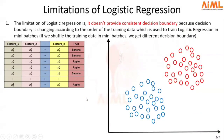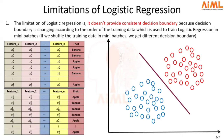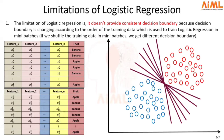Let's start with the limitation of logistic regression. The limitation of logistic regression is that it doesn't give us a consistent decision boundary. So let's say this is our training data and we train logistic regression on this data to give us a decision boundary. If we shuffle the same training data, logistic regression will give us a different decision boundary. If you keep on shuffling the same training data, logistic regression will not give us a single decision boundary, but altogether different decision boundaries in all the scenarios.